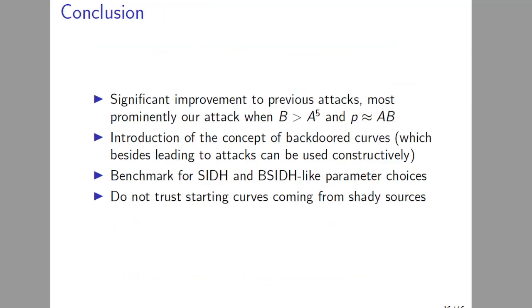To conclude, we have made significant improvements to previous attacks. Most prominently, we have an attack whenever B > A^5 and p ≈ AB, which breaks a certain group key exchange with six or more parties. We have introduced the concept of backdoor curves, which is an important concept for future designs, and actually can also be used in a constructive fashion. Our methods can serve as a benchmark for SIDH and B-SIDH-like parameter choices for future cryptosystems. And finally, we advise against using starting curves coming from shady sources. Thank you.